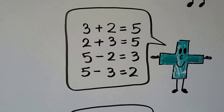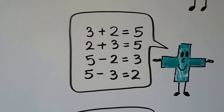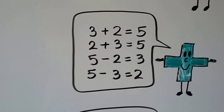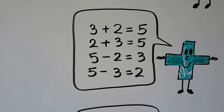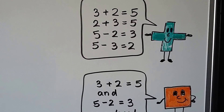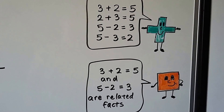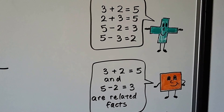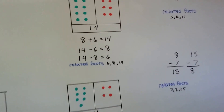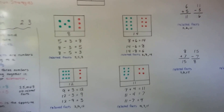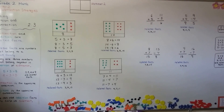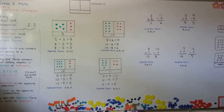So we can use addition, and see how it's the opposite of subtraction. 3 plus 2 equals 5, and 2 plus 3 equals 5 — because we can add them in any order. That's what the commutative property told us. And 5 minus 2 equals 3, and 5 minus 3 equals 2. So now you know that subtraction is the opposite of addition, and addition is the opposite of subtraction. We know what related facts are, and we can use addition to help us subtract. They're all related.